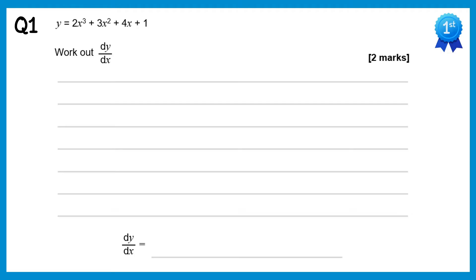For this question we just need to differentiate, so we'll do one term at a time starting with 2x cubed. We do the power 3 times 2 which gets you 6, then reduce the power down from 3 to 2, so it's x squared. For the next one, power 2 times 3 gives plus 6, reduce the power down from 2 to 1, so it's just x. For the next one, a multiple of x — the x disappears so we just get plus 4. The constant term differentiates to 0 so we don't write anything more.